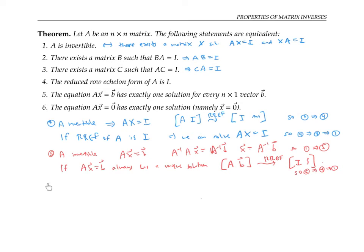Finally, let's consider statement six. Statement six says the equation A times x equals zero has exactly one solution. That solution is necessarily going to be the zero vector since any matrix times a zero vector is a zero vector. Well, the argument that this is equivalent to A being invertible is pretty much like the last one.